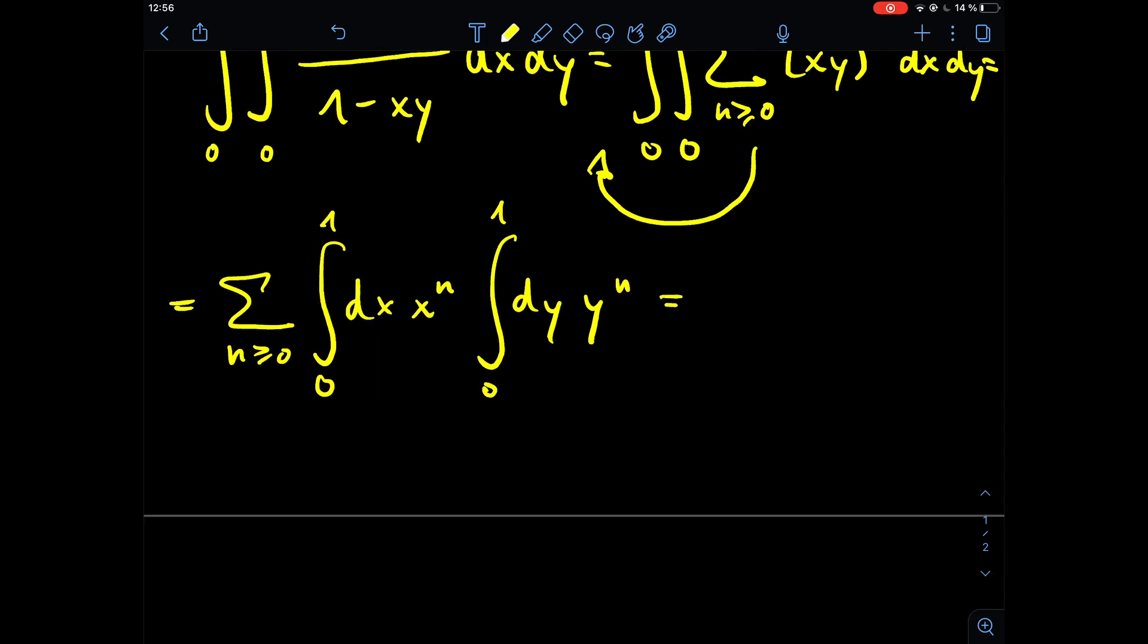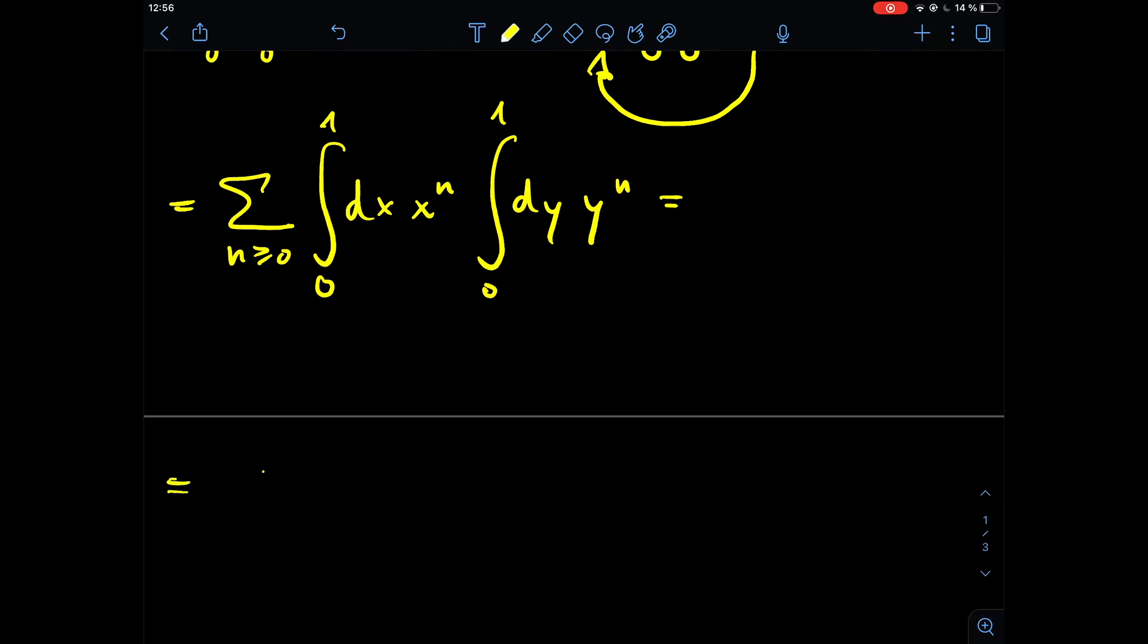So let's solve those integrals. We have the sum n being greater or equal to 0. First integral is x to the power of n plus 1 divided by n plus 1, evaluated at the limits 1 and 0, and we multiply the whole thing times y to the power of n plus 1 divided by n plus 1, evaluated at the limits 1 and 0.